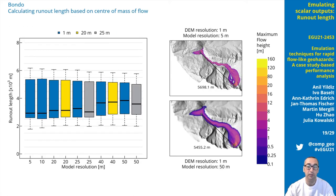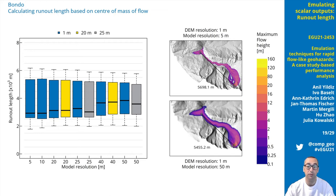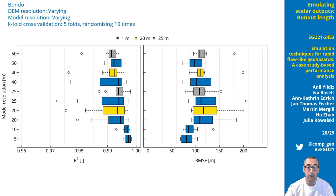Next comes the runout length for simulations of the Bondo case. In the figure on the right-hand side, you can see how we calculated the runout length between the center of mass of flow in the first step and the last step of the simulation. No significant effects of DEM or model resolution can be seen in the ranges and median values of runout length obtained from sets of 50 simulations. Similar to the impact area, validation of the emulators built with simulations of varying DEM or model resolutions provided high R-square values.